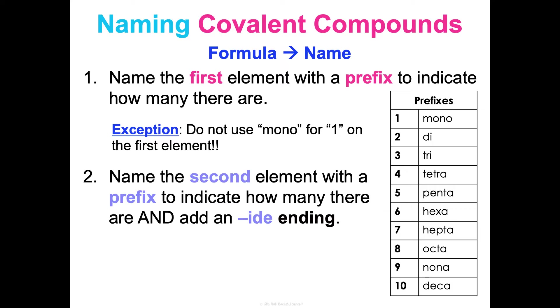Let's do an example: P2O5. Name the first element, that's phosphorus, but use a prefix to show how many there are. There are two phosphorus, so we would say diphosphorus. Now the second one: name the second element, that's oxygen. It needs a prefix for how many, so five, penta-oxygen. But we also need an -ide ending, so pentoxide. Diphosphorus pentoxide.